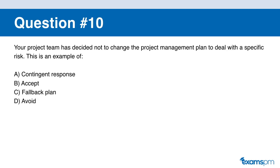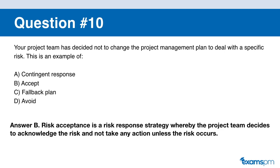Question number ten. Your project team has decided not to change the project management plan to deal with a specific risk. This is an example of: A: contingent response. B: accept. C: fallback plan. D: avoid. If you said B, you are correct. Risk acceptance is a risk response strategy whereby the project team decides to acknowledge the risk and not take any actions unless the risk occurs.